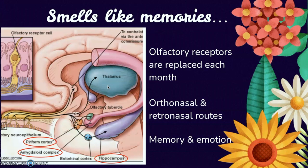Ever catch a scent and get instantly teleported to a different time and place? Unlike any other sensory center in the brain like for vision, hearing, or touch, the olfactory bulbs — our smell centers, located right underneath our forehead — have direct connections to two other brain areas that are strongly involved in memory and emotional processing: the amygdala and the hippocampus. This may be why scents are so quick to trigger emotions and memories, bypassing sensory relay stations and directly stimulating our emotional and memory centers. Another fun fact: women tend to have a better sense of smell than men, perhaps due to women having 50% more neurons and glia in the olfactory bulbs.